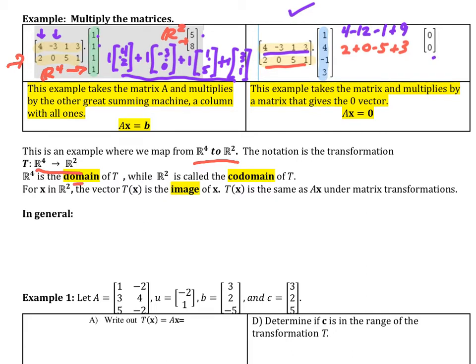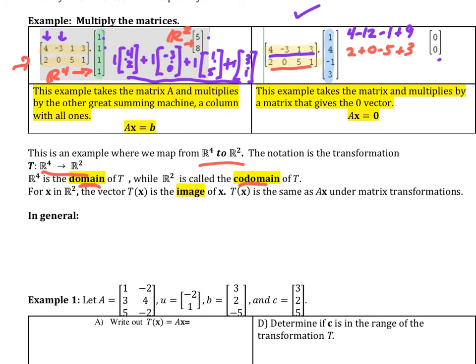R4 is what we call the domain of T, while R2 is called the codomain of T. So what we start with is the domain, and what we finish with is the codomain. So what we're going to do is we're going to take this notation right here, T of x, and that is going to be the image of x. T of x is the same thing as A times x under matrix transformations.